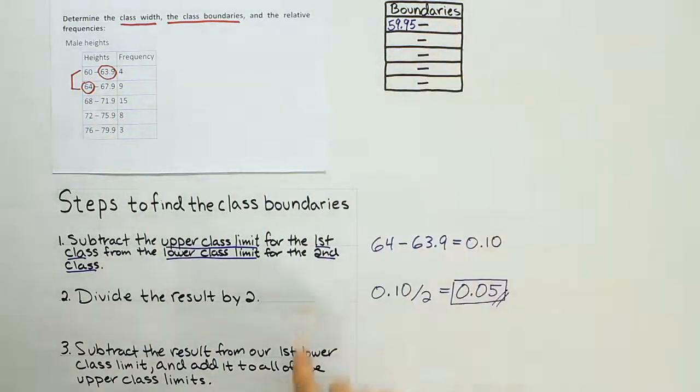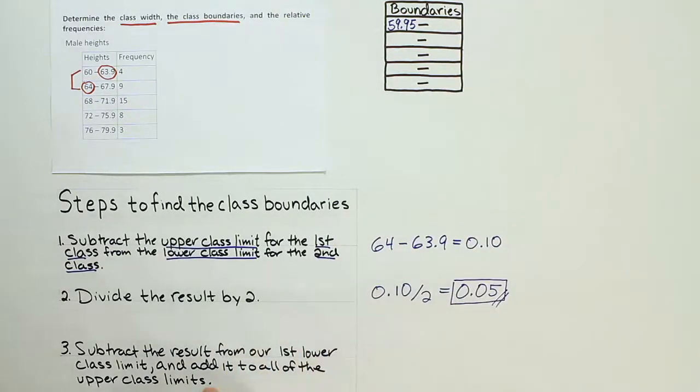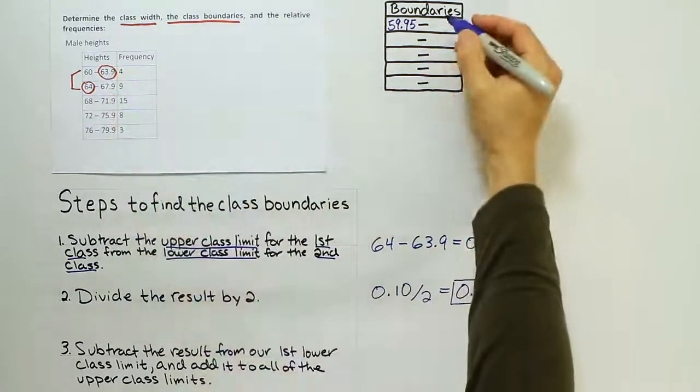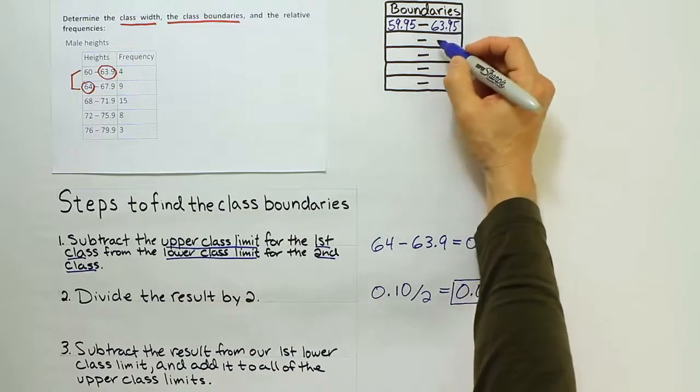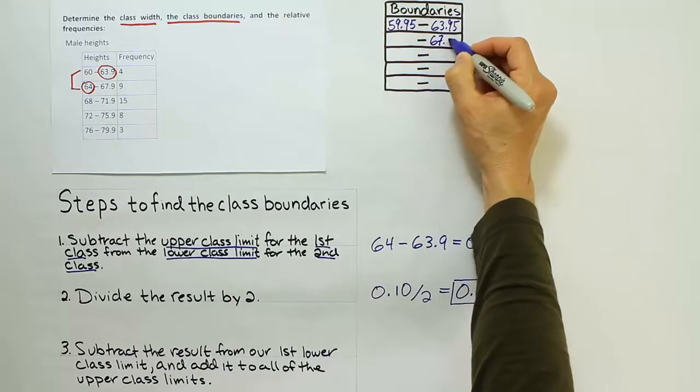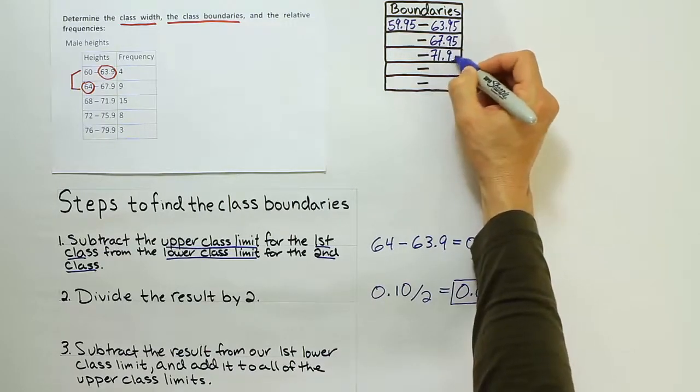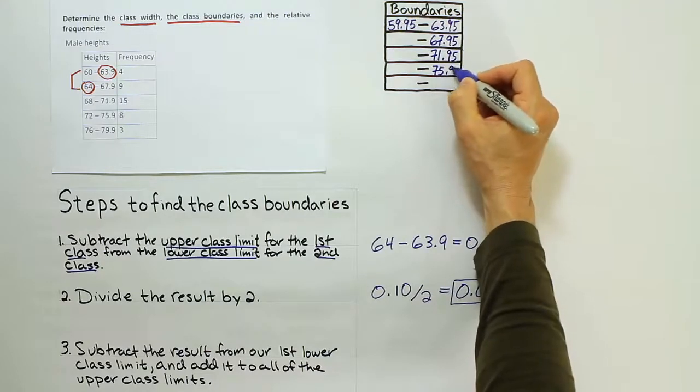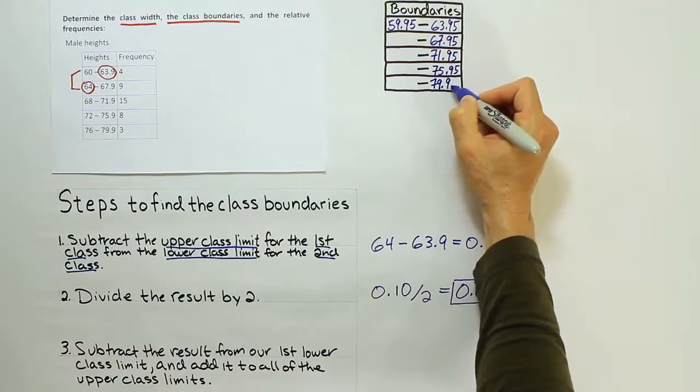To get the second boundary, and to get all the others that are going to be down in this column, we're going to add this same 0.05 to all of the upper class limits. So I'm going to say 0.05 added to each of these numbers. So that'll be 63.95, 67.95, 71.95, 75.95, and 79.95.